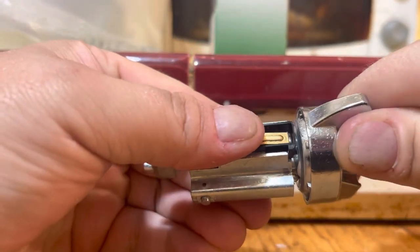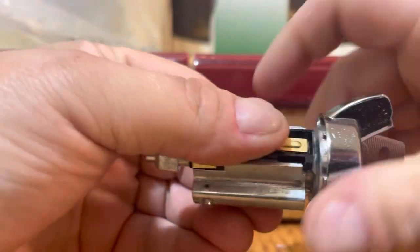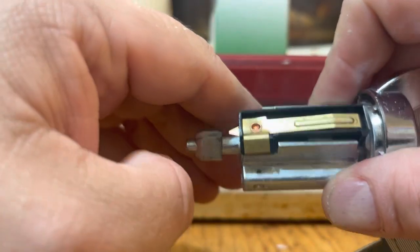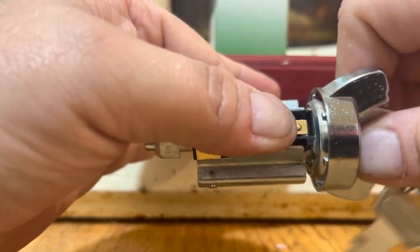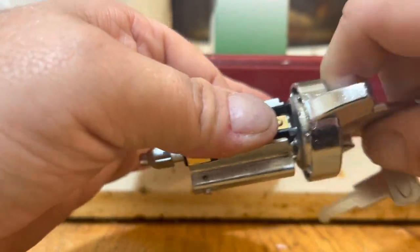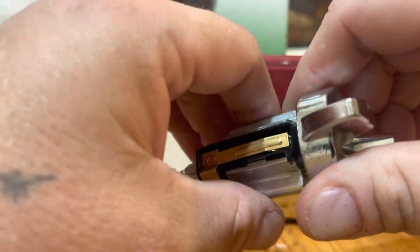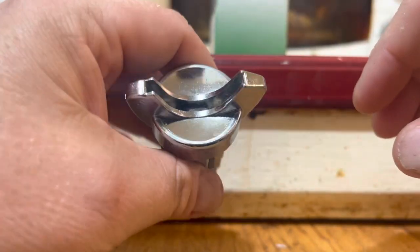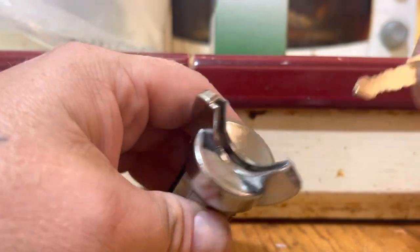And once the lock picks over, we can push the retainer pin in. So we can extract the lock without the key, and then install this one.